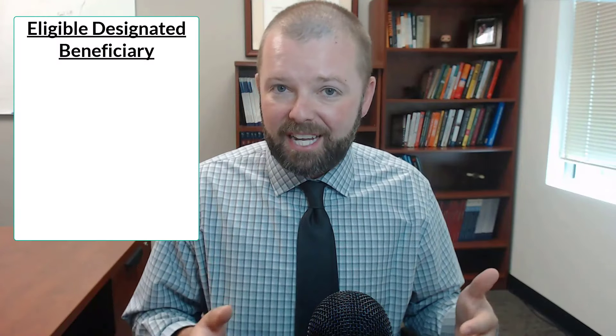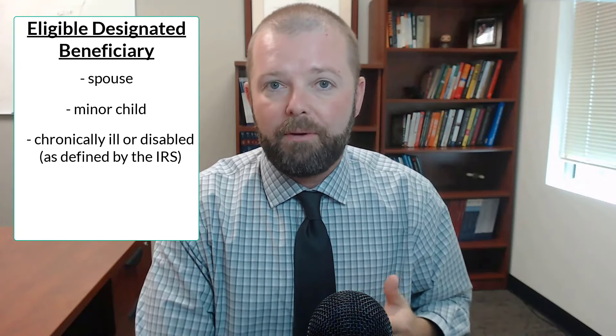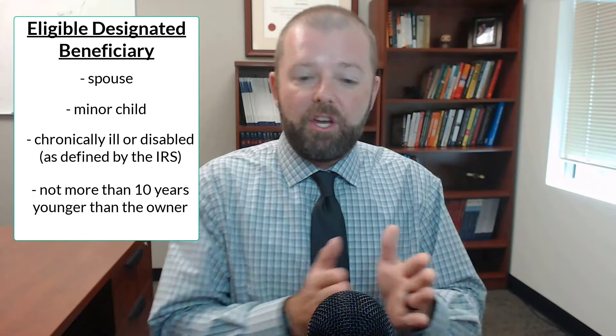If you're an eligible designated beneficiary — because you're a spouse, a child, chronically ill or disabled per IRS definitions, or not more than 10 years younger than the person who died — you can use that life expectancy methodology for your own distributions. That's generally more favorable. If you're 50, you might have a life expectancy of around 35 years based on the tables, which means you divide by a larger number and are forced to take less out. You can always take out more than the minimum, or even take all of it in year one, but you have more flexibility and latitude as an eligible designated beneficiary.